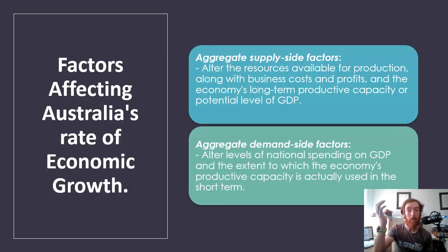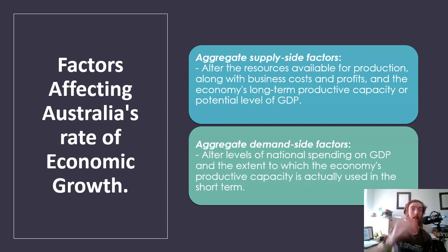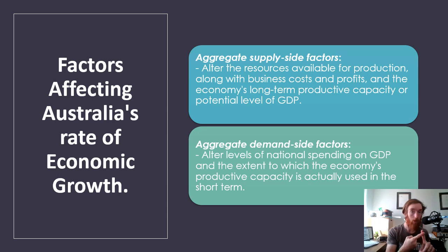There are two different sides that impact economic growth. The aggregate supply side alters resources available for production, along with business costs and profits, and the economy's long-term productive capacity or potential level of GDP. Aggregate supply only impacts businesses — it boils down to two things: it impacts either a business's cost of production or their efficiency. Anything that affects those is going to be an aggregate supply factor.